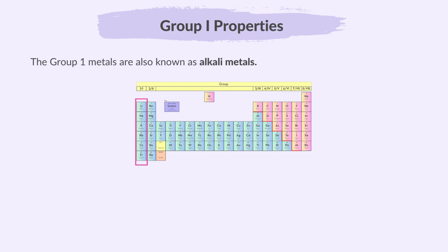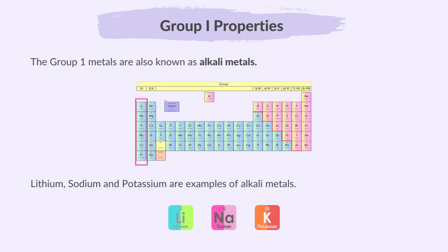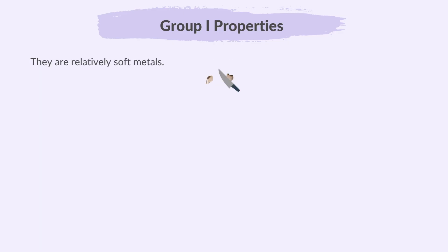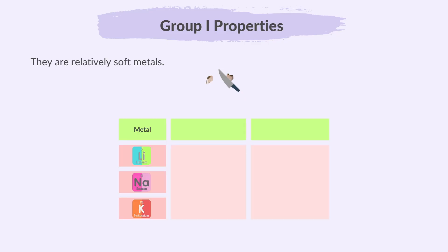The group 1 metals are also known as alkali metals. Lithium, sodium and potassium are examples of alkali metals. They are relatively soft metals — you can cut them with a knife. As you go down the group, you may notice some trends in alkali metals related to their physical properties, such as their melting points and densities.